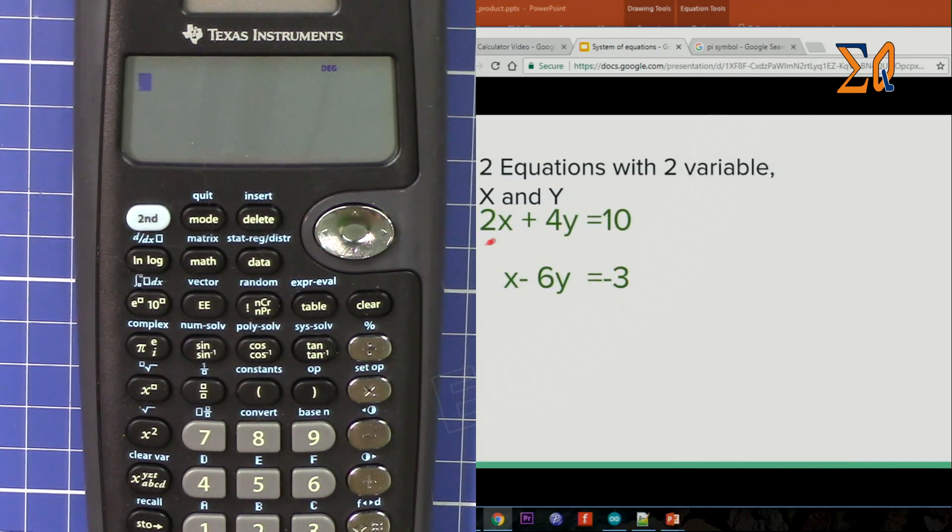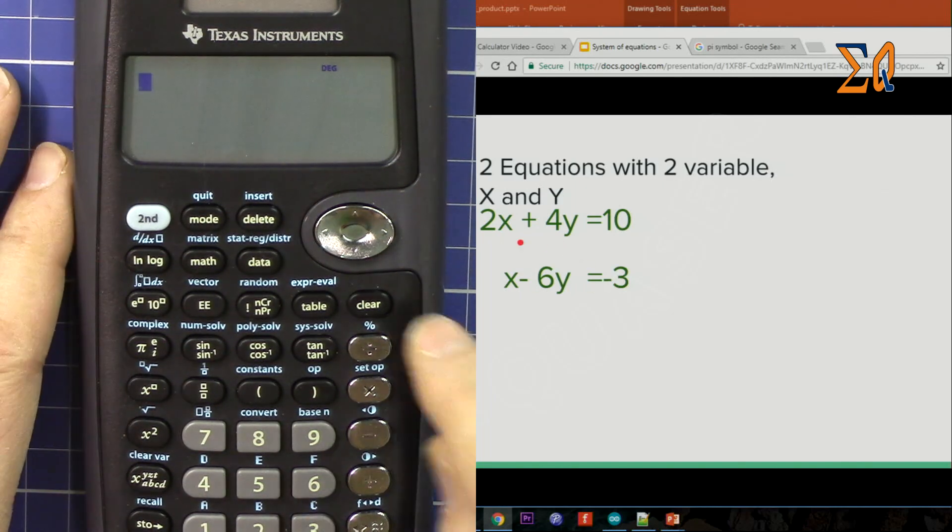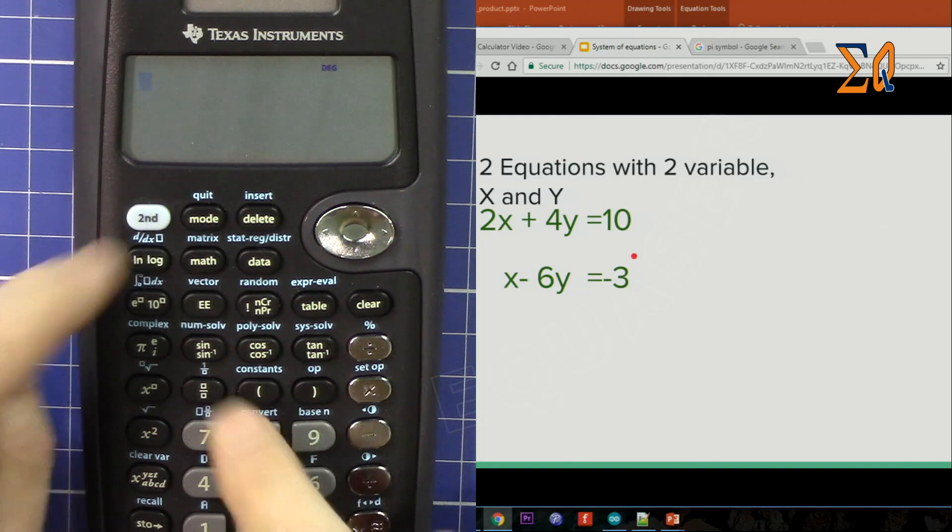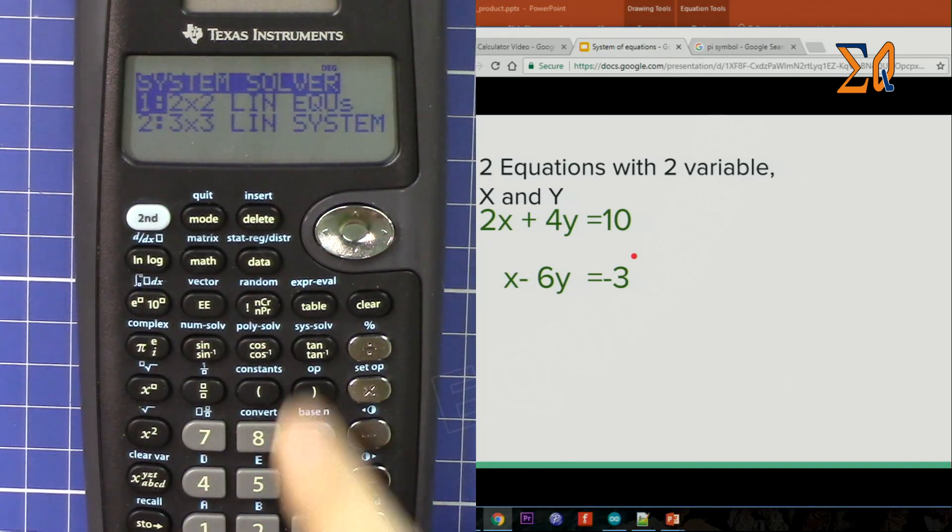The system of equations with two variables involves x and y. Here is my equation: 2x + 4y = 10 and x - 6y = -3. We want to find x and y. Let's get started. Press second function and sys solve.